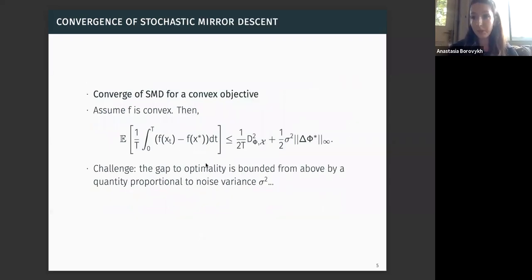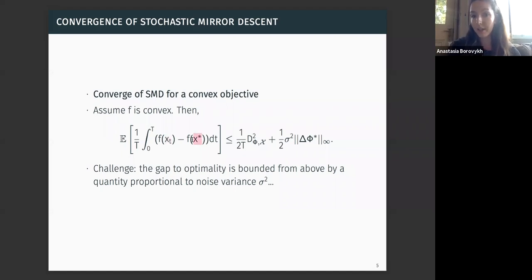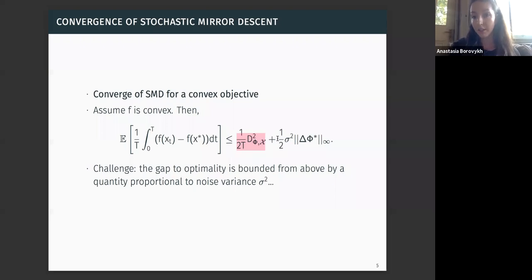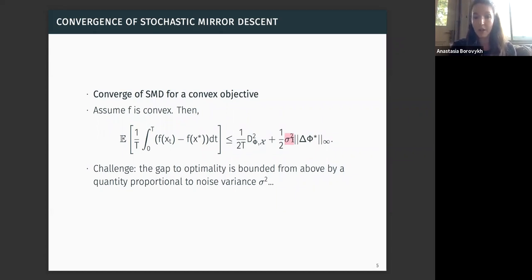We have a first result which is relatively standard for stochastic optimization. Assuming our objective function f is convex, the time average of f(x_t) minus f(x star) is bounded by a term that is decreasing in time — as we run our optimization algorithm longer, this term decreases. We also have a noise term which is a function of the amount of noise added into our system, specifically a function of sigma squared. So the gap to optimality is bounded above by a quantity decreasing in time plus a quantity proportional to the noise variance. The more noise variance we have, the further we are in expectation from our optimal loss function value.